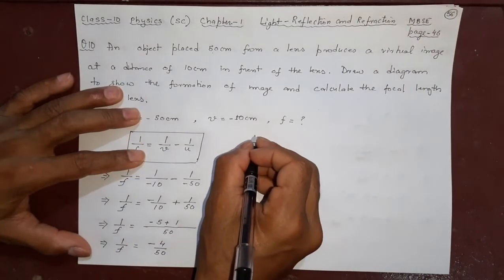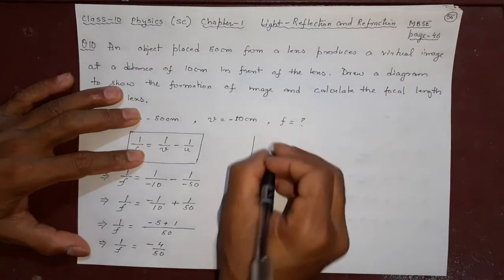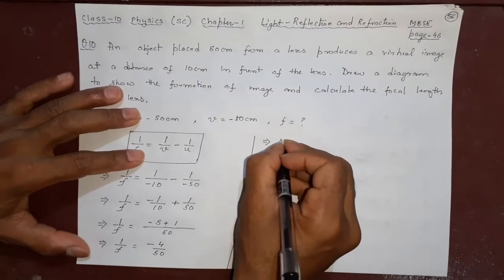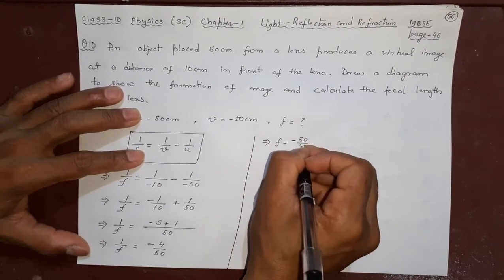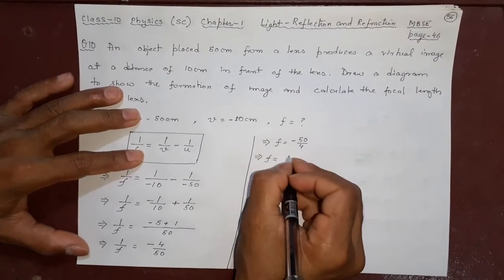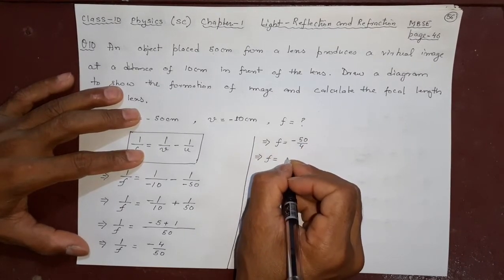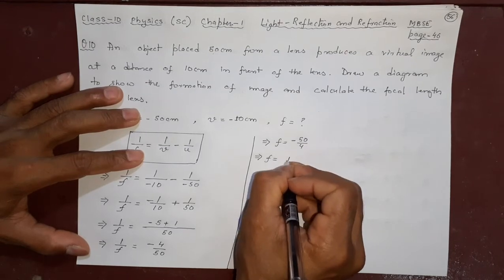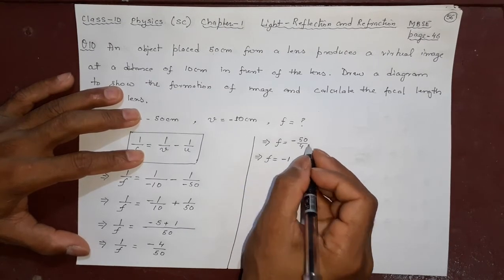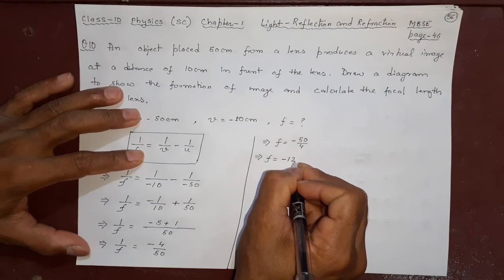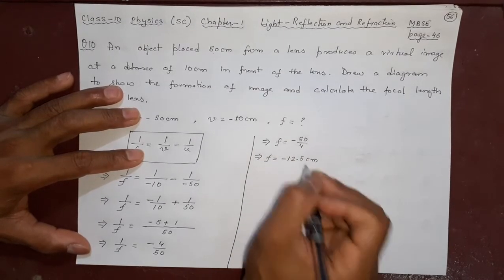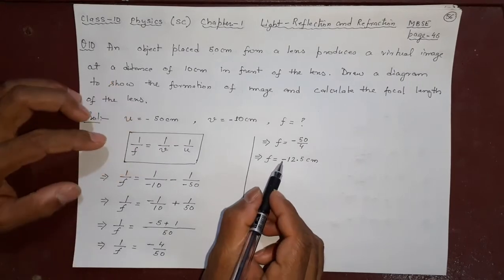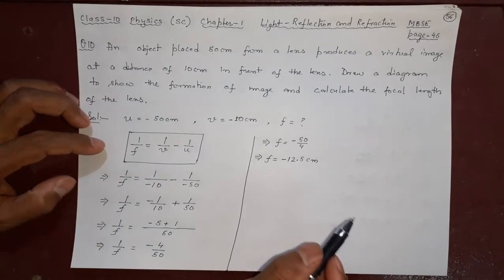You can cancel it also, I will continue. F = -50/4. This will give you: 4 ones are 4, 1 remains 10, 4 twos are 8, 2 remains 20.5. The focal length is -12.5. It is coming minus, so it is a concave lens.